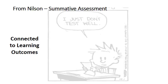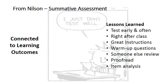The next section in Nielsen's book is about summative assessment. The big takeaway is that a summative assessment — something you give students during the term or at the end of the term to gauge their learning — should be connected to learning outcomes. It makes perfect sense that if you ask students to learn something, you should test them on what you expect them to learn. Nielsen recommends testing early in the term and as often as possible, and spending some time writing questions right after the lecture while the material is fresh.